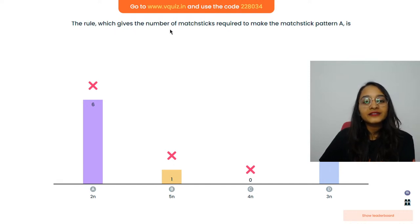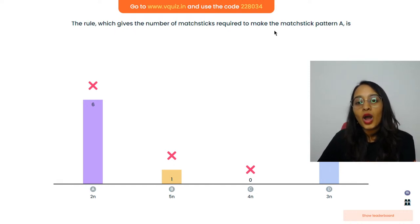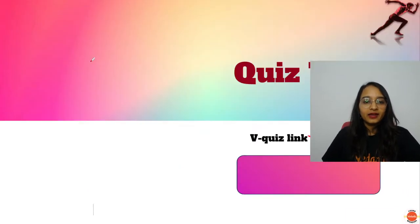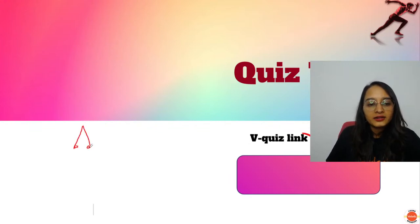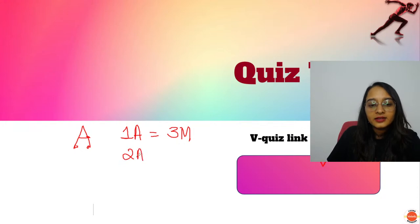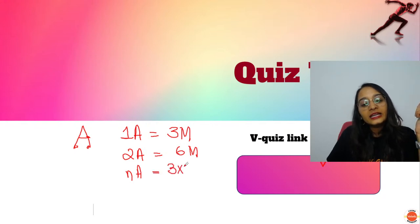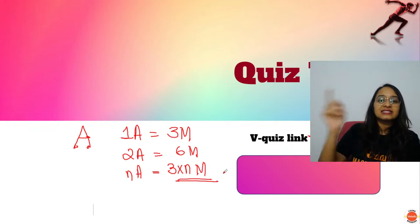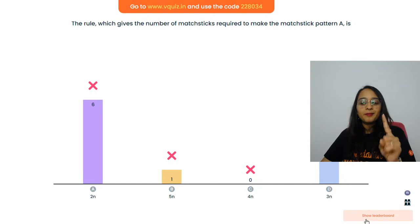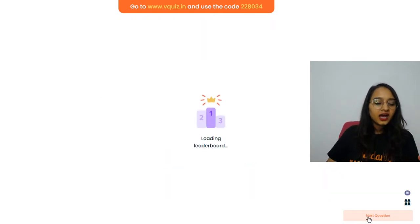Next quiz question: 'The rule which gives the number of matchsticks required to make the pattern A.' To make 1 letter A you need 3 matchsticks. To make 2 A's you need 6 matchsticks. So if you have to make N number of A's, you need 3 multiplied by N matchsticks — it is 3N, not 2N. It is 3N matchsticks.